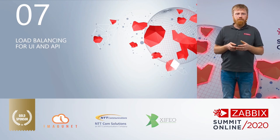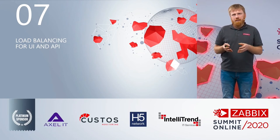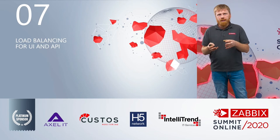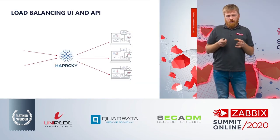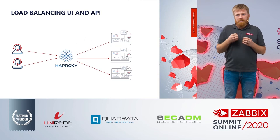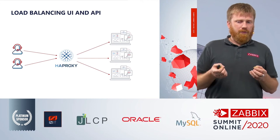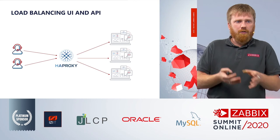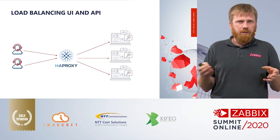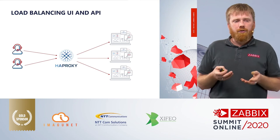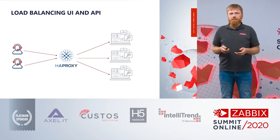Another feature which will allow Zabbix to be deployed more easily in cloud or using Kubernetes for the frontend: we now support full load balancing for user interface and API. Previously you could do it, but you needed to use session persistence — this is no longer true. You can use tools like HAProxy and deploy frontends as needed using Docker in Kubernetes or whatever else, automate it, deploy more if overloaded or shut them down if not needed. Your users don't notice the difference — they just access your frontend and it keeps working.